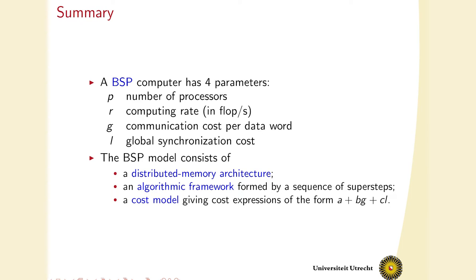To summarize, a BSP computer can be characterized by just four parameters: p the number of processors, r the computing rate in flops per second of a single processor, g the communication cost per data word, and l the global synchronization cost. And then the model has three parts, the BSP model, a distributed memory architecture, a framework for the algorithm, because it consists of a sequence of super steps, and also a cost model, which can help us predict the time an algorithm takes. And this is an expression of the form A plus BG plus CL.